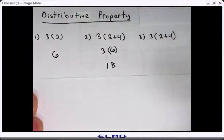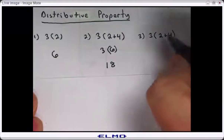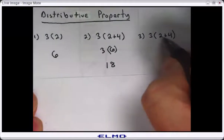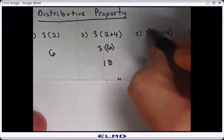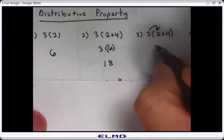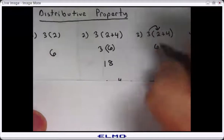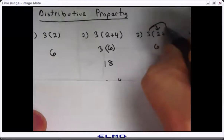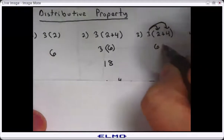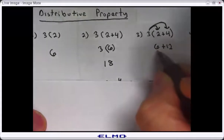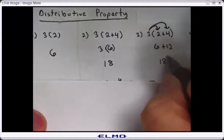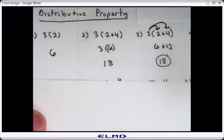Another way to have done that is using the distributive property. Instead of following order of operations and doing two plus four first, I could distribute three times two to get six and three times four to get positive 12. Then combine like terms — my two constants — six plus 12 is 18. And we could circle all the answers.